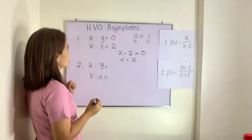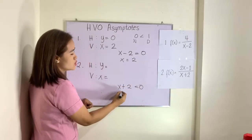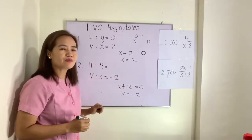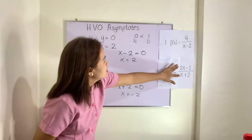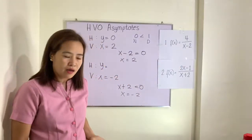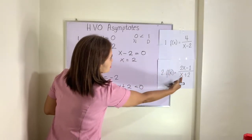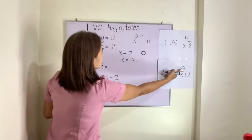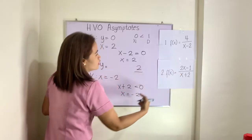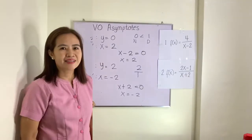For example number 2, the denominator gives x plus 2 = 0, so x = negative 2 is the vertical asymptote. In this case, the degrees of the numerator and denominator are equal — both are degree 1. When degrees are equal, take the numerical coefficient of the leading variable in the numerator and divide by the numerical coefficient of the leading variable in the denominator. That gives y = 2 as the horizontal asymptote.